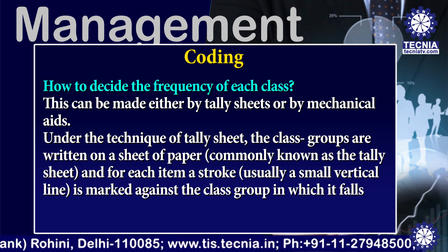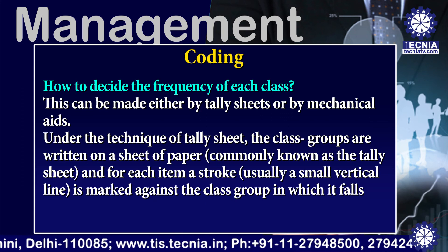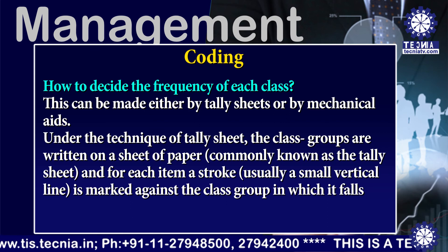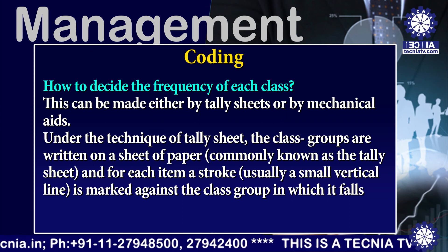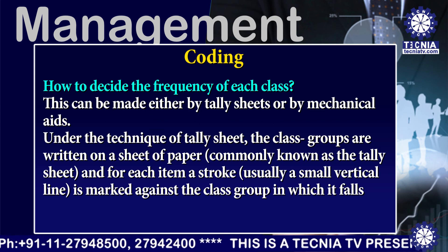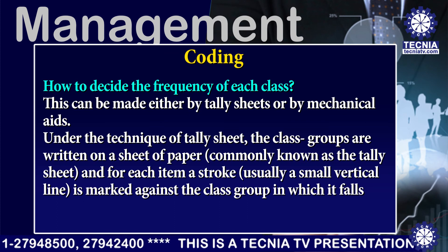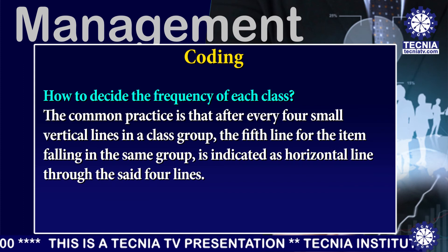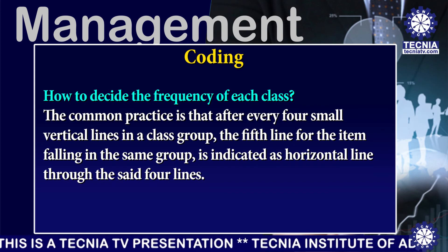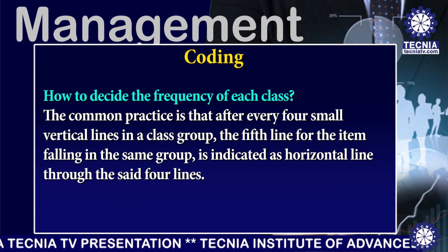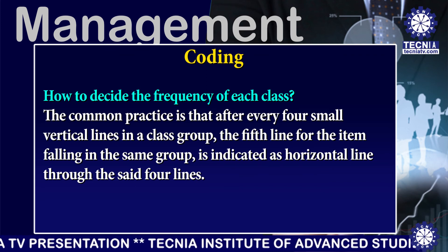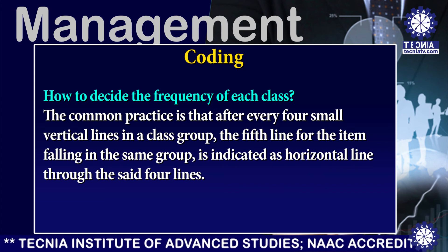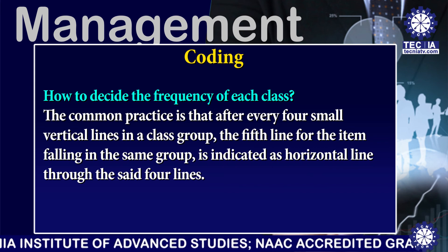Under the technique of tally sheets, the class groups are written on a sheet of paper commonly known as the tally sheet, and for each item a stroke — usually a small vertical line — is marked against the class group in which it falls. The common practice is that after every four small vertical lines in a class group, the fifth item falling in the same group is indicated as a horizontal line through the said four lines.